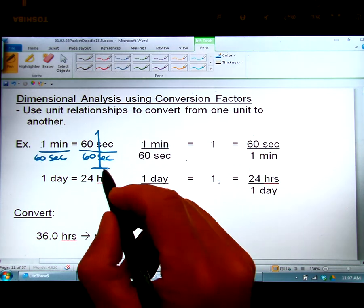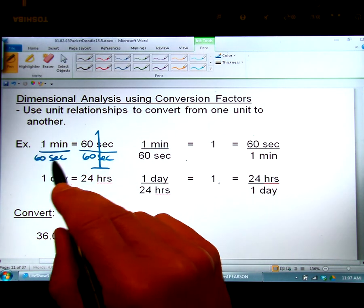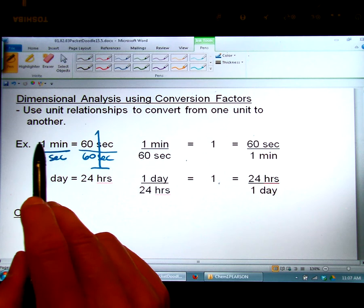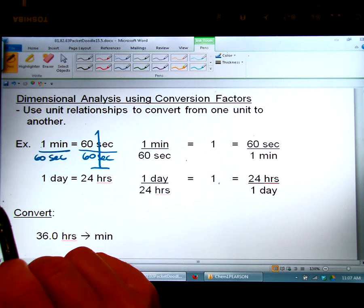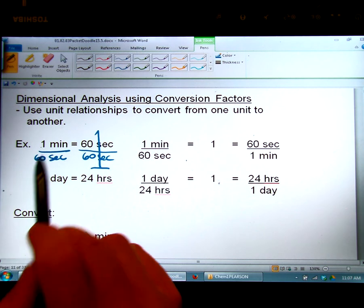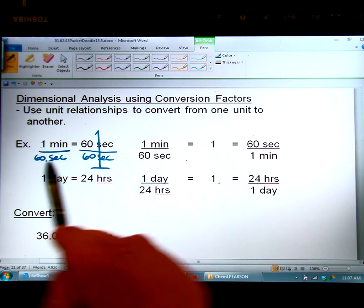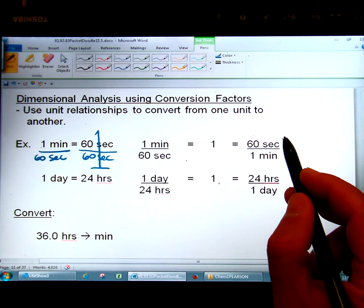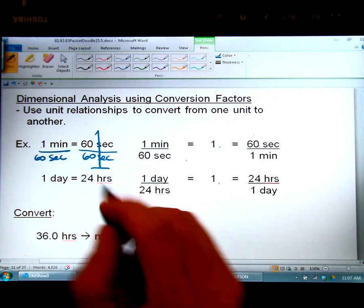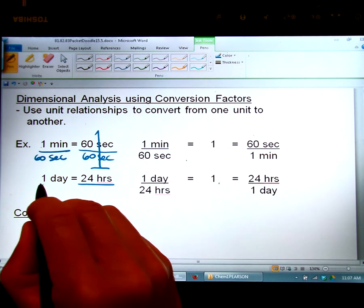The answer is one. So one equals one minute divided by 60 seconds which intuitively hopefully makes sense because the top of the fraction is the same thing as the bottom of the fraction so they divide out. Now we could have divided by one minute instead of by 60 seconds and then we would have seen this as the answer that 60 seconds over one minute equals one. You can do this with any relationship of equality.